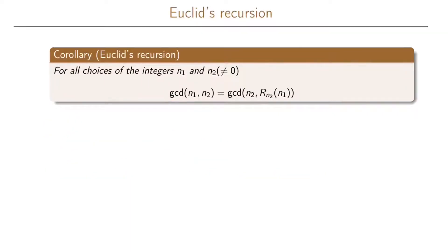A corollary to this theorem is called Euclid's recursion. Euclid's recursion says that for all choices of integers n1 and n2, where n2 is not equal to zero, we have that the GCD of n1 and n2 is the same as the GCD of n2 and the remainder when n1 is divided by n2.